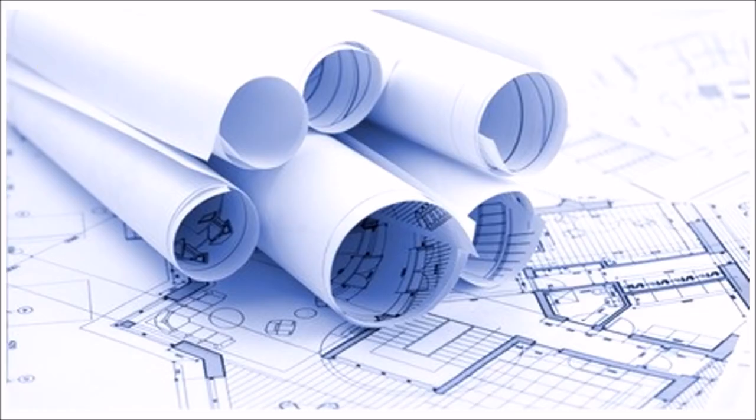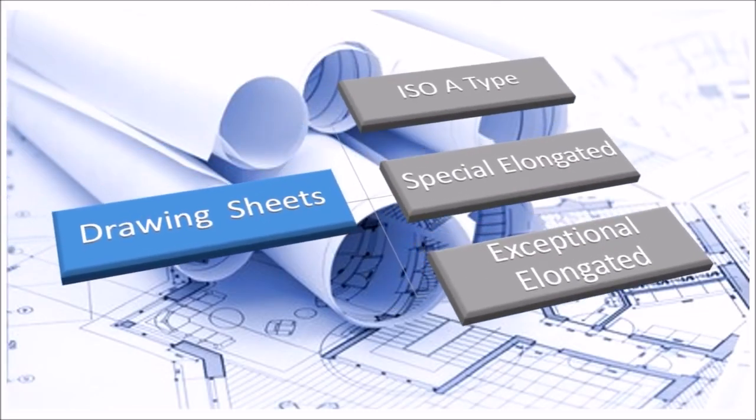Selection of a drawing sheet is first and foremost part of engineering drawing. There are three types of sheets: ISO A type, Special Elongated, Exceptional Elongated Sheet.